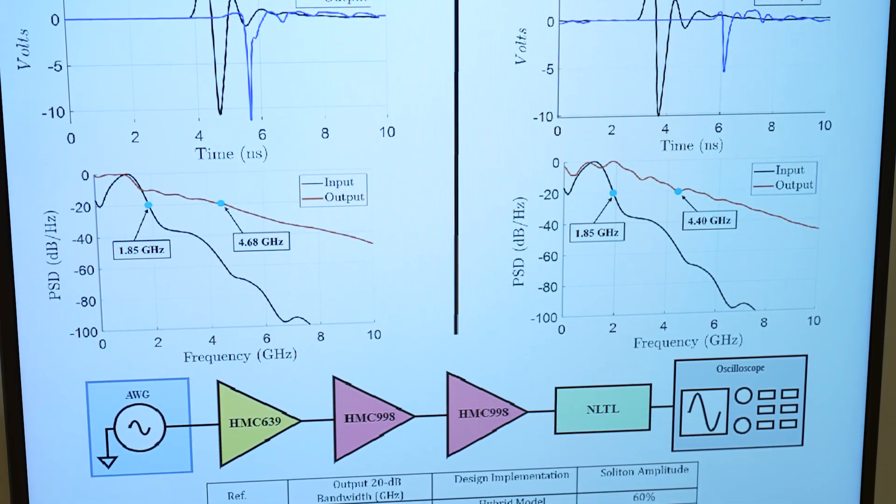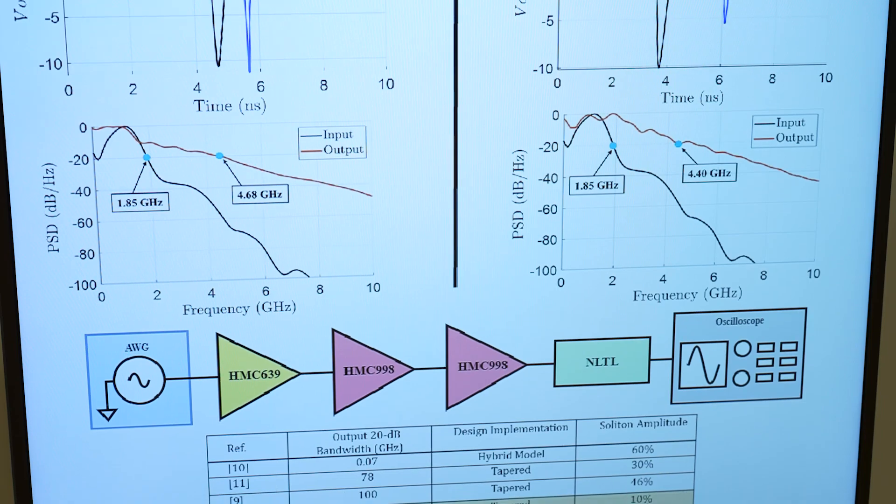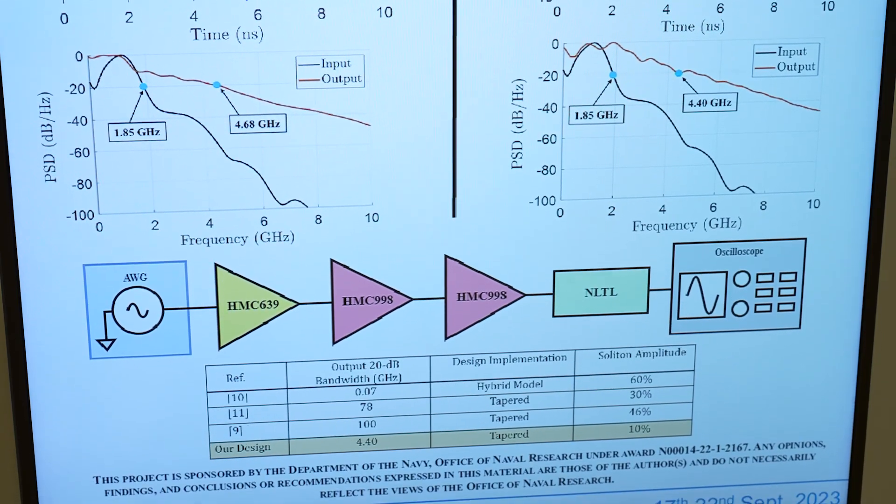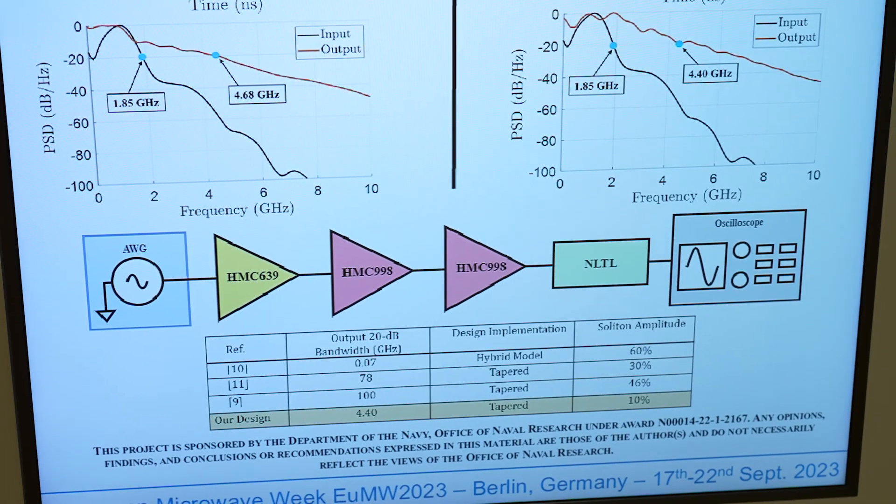However, with pulse-based radar, you usually get following solitons when you compress that pulse. This work specifically works on decimating all of those secondary solitons through different geometric tapering techniques of the Bragg frequency.